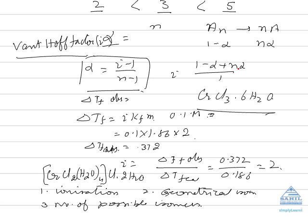Let us take the example of CrCl3·6H2O. If 0.1 molar solution has been provided to you and it has the freezing point 0.186, then calculate how many species of this exist in the solution or what is the value of i. You see, ΔTf observed will be equal to i × Kf × m.